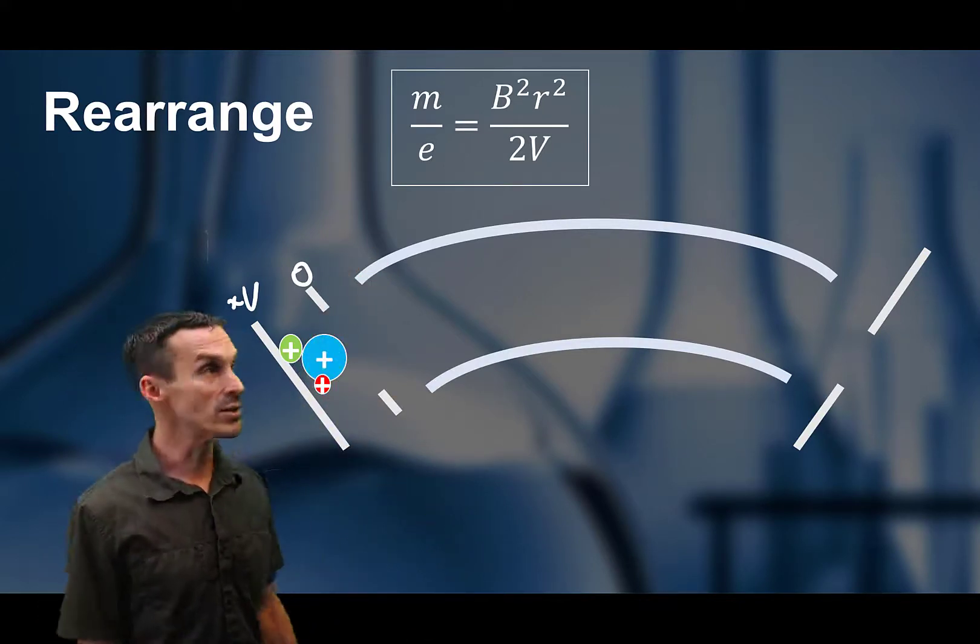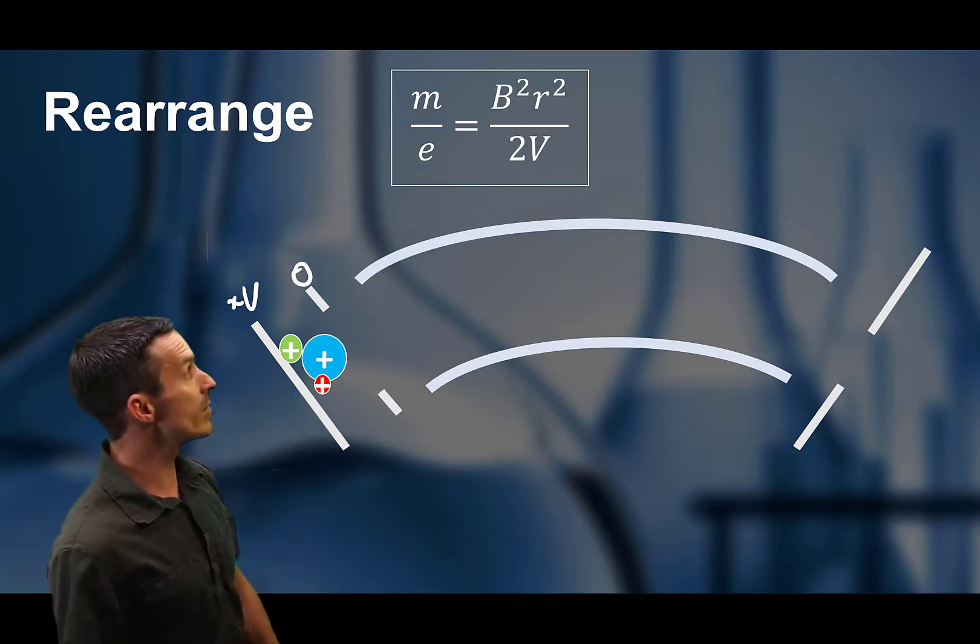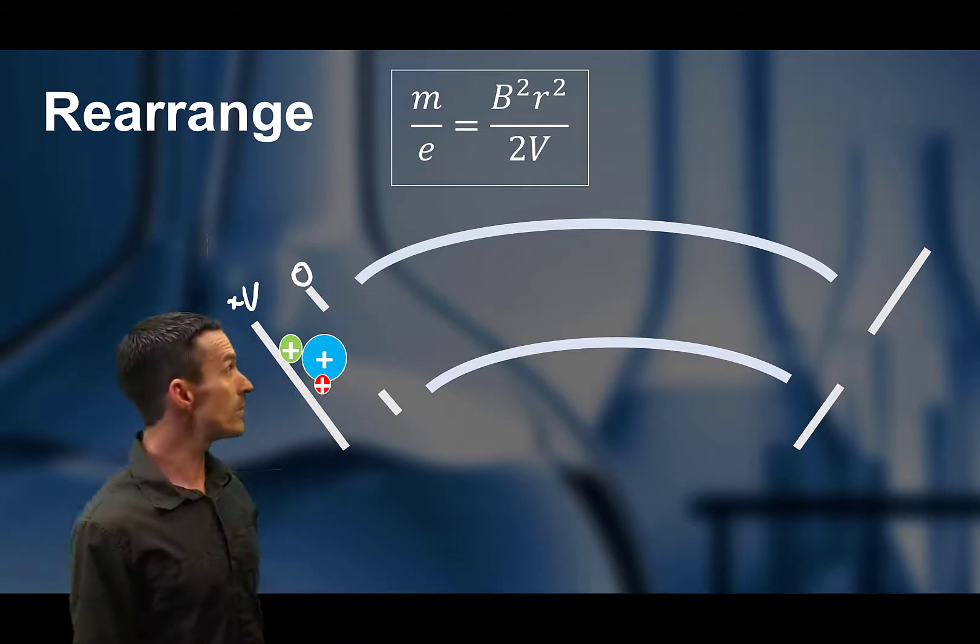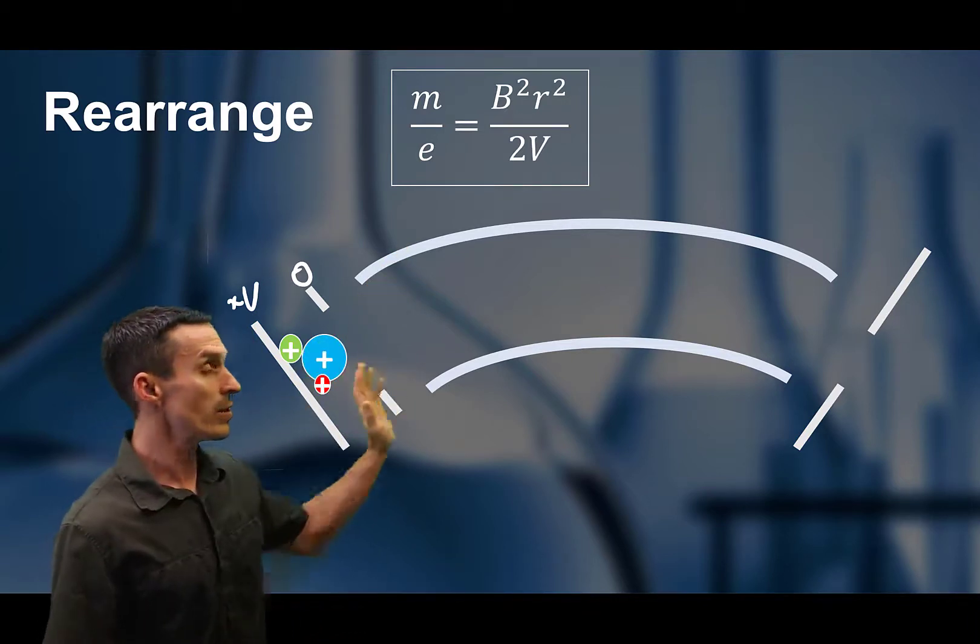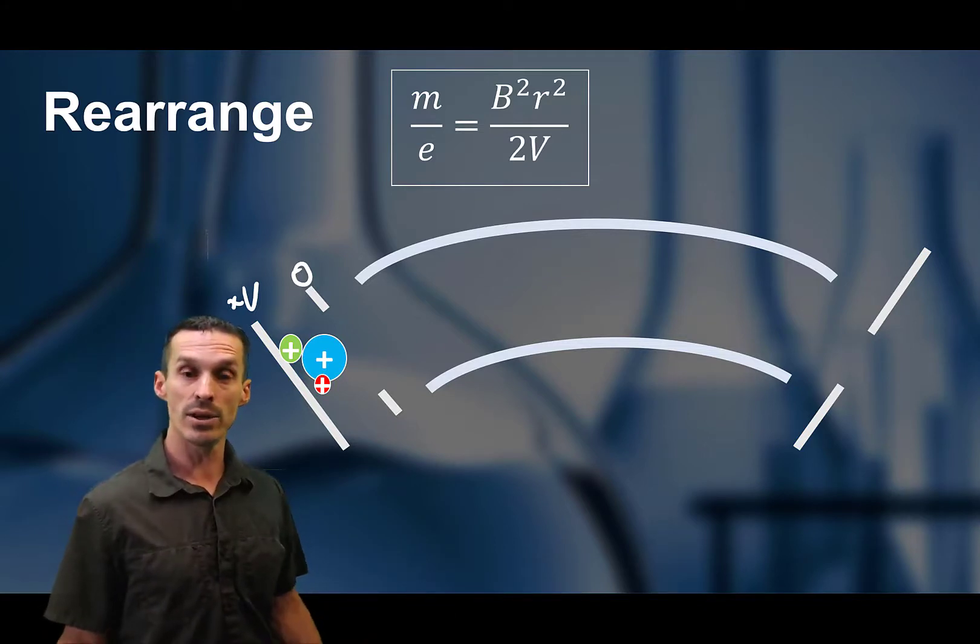So when you rearrange the equation, you see m over e, m over z, pretty much the same thing. It is related to the magnetic field strength, to the radius of curvature, as well as the voltage that we're using to accelerate the ions outside of this sector.